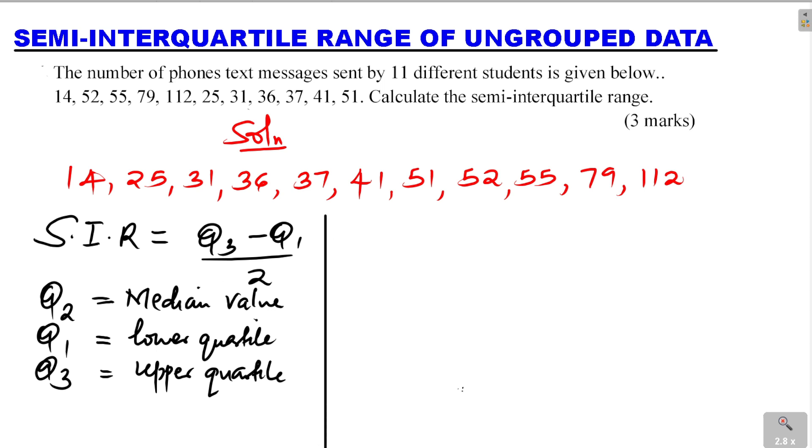Now how do we identify Q3 and Q1? We begin by identifying Q2, the median. Given this set of data, what is the median? The median is the middle value. Remember, to get the median, you must arrange this data in ascending or descending order. The value exactly at the middle is 41.